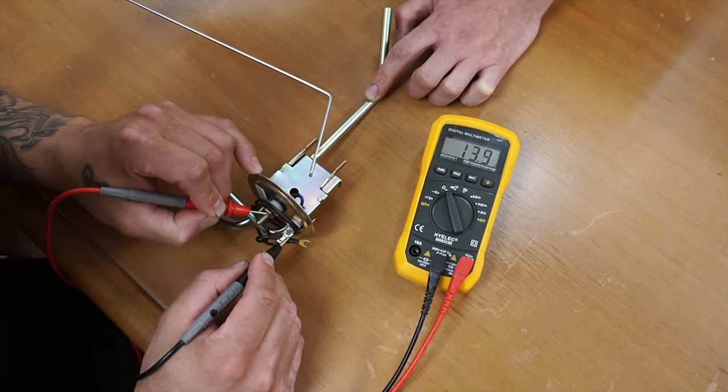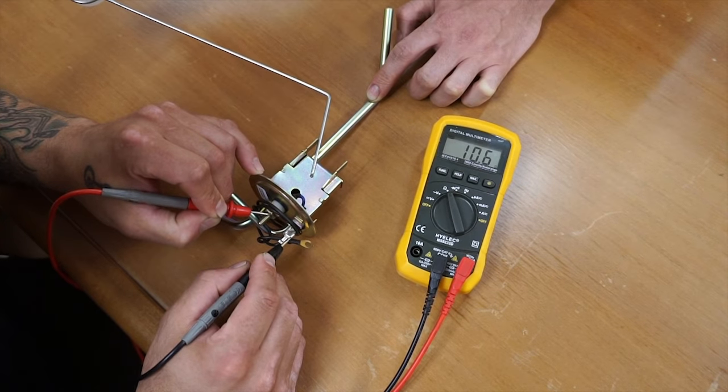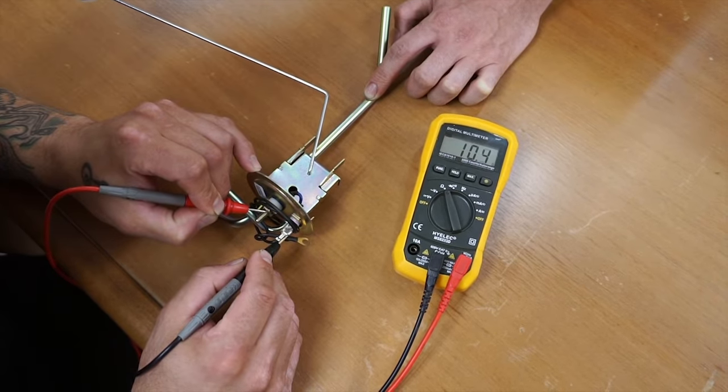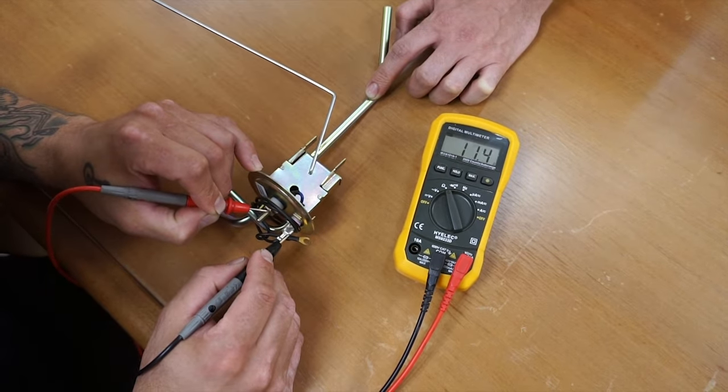Moving up to full, we know we need to be somewhere around 10 ohms. You can see we're at 10.6. So this one's perfect right out of the box. Now you can go ahead and install it in your tank.